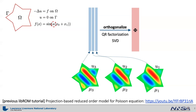Because one reduced basis covers the whole parameter space globally, we call it a global reduced order model. We immediately see some problems. Adding three linearly independent solution vectors to the reduced basis was enough because the parameter space was pretty small. Furthermore, the Poisson problem was time-independent, which generates at most one solution vector per simulation.